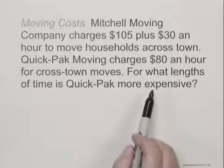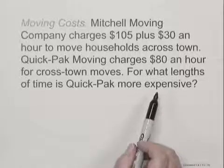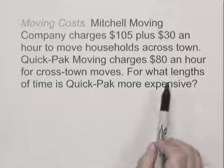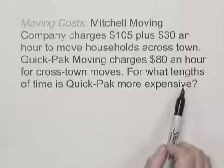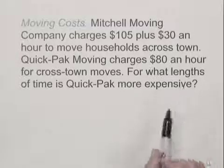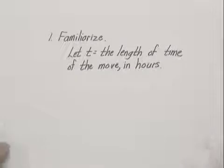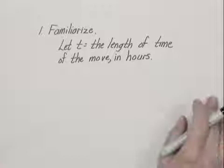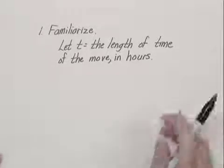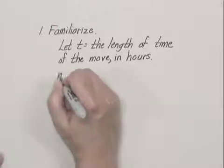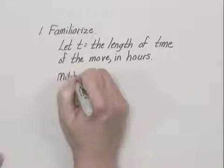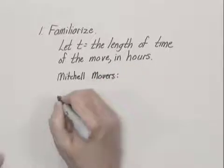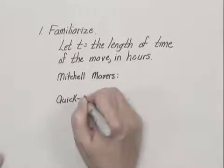We'll use our five-step problem-solving process to solve this problem. One of the first steps in the familiarize step is to ask ourselves what we're looking for, and that is what lengths of time Quick Pack is more expensive. We will define a variable: we will let t equal the length of time of the move in hours. We can also describe how much it costs to use Mitchell Movers and how much it costs to use Quick Pack Moving, and we write that in terms of t.